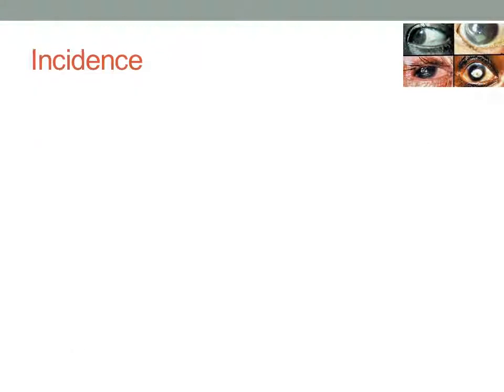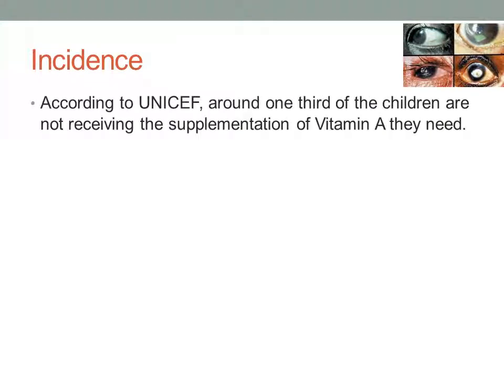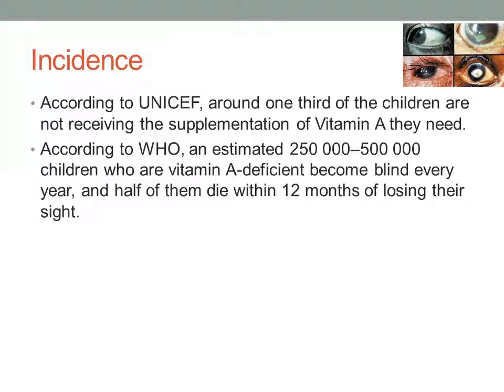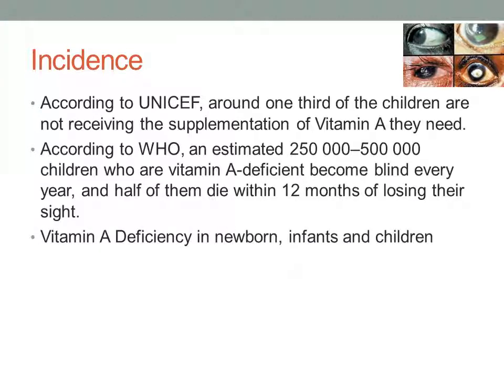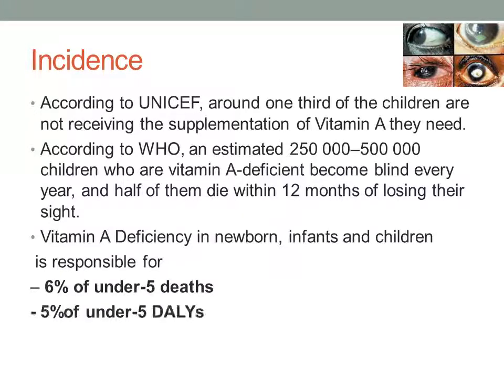Vitamin A deficiency is one of the major nutritional problems which can be controlled through diet. According to UNICEF, around one third of children are not receiving the vitamin A supplementation they require. According to WHO, an estimated 2,500,000 to 5,500,000 vitamin A deficient children become blind every year, and half of them die within 12 months of losing their sight. Vitamin A deficiency in newborns and children is responsible for 6% of under-5 deaths.